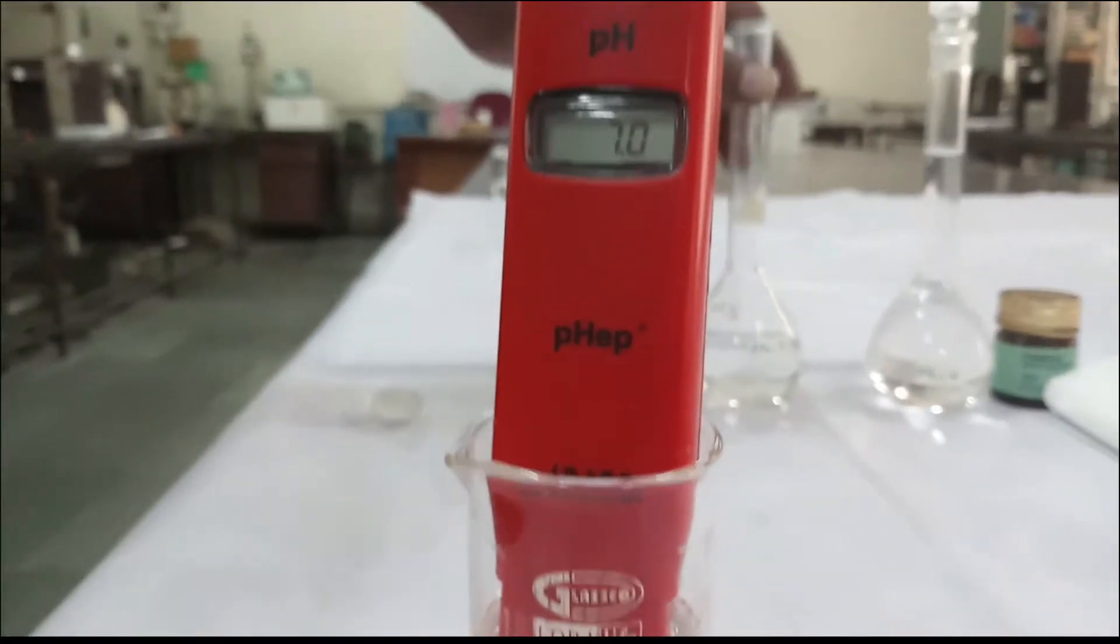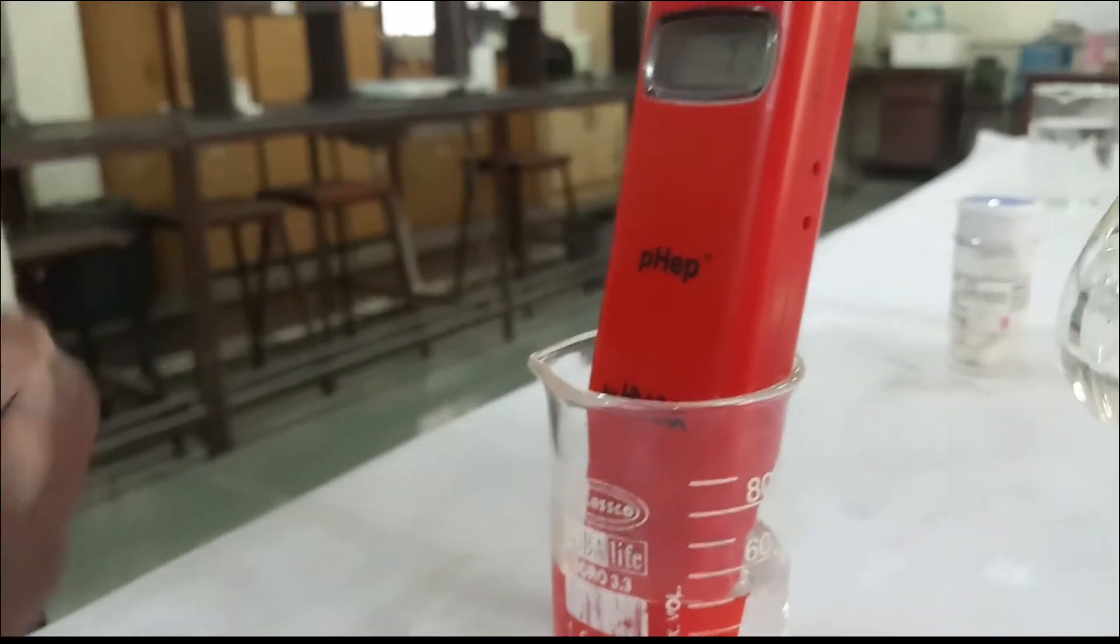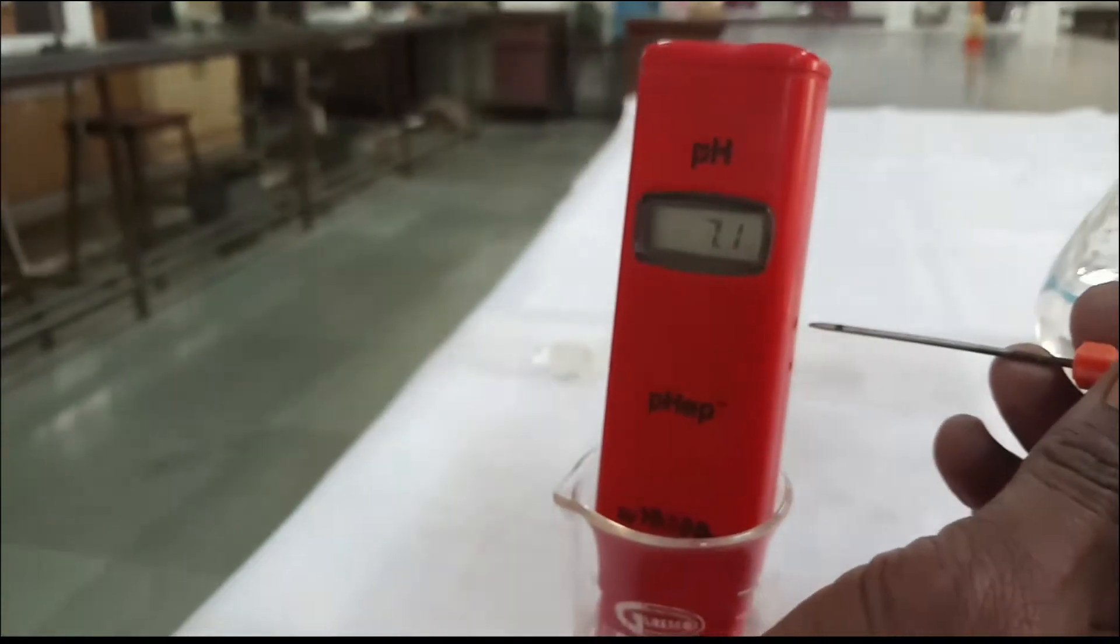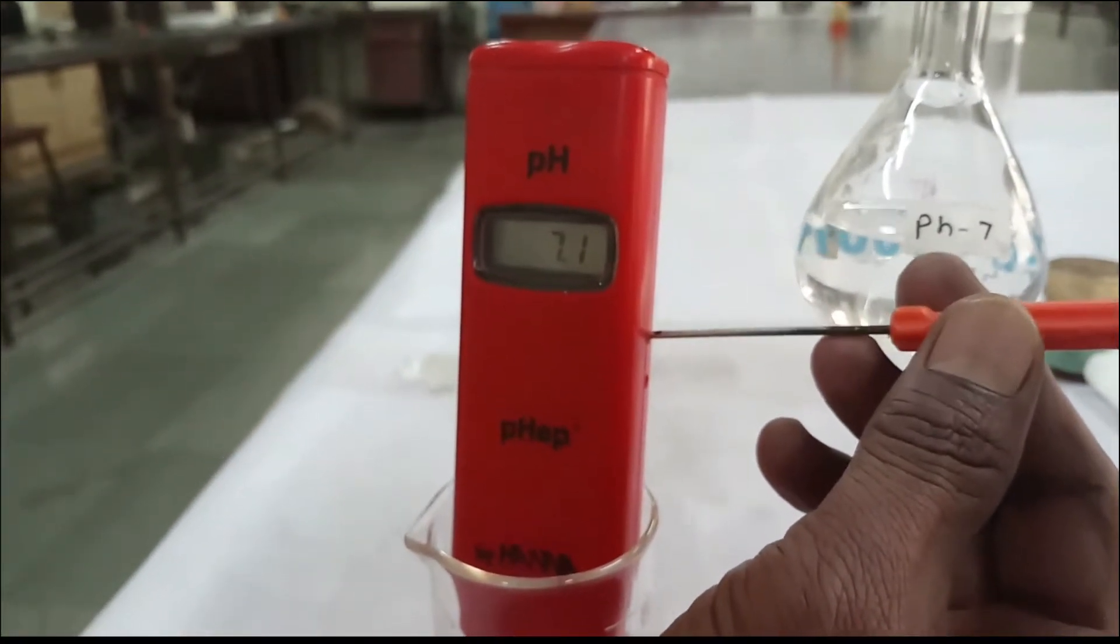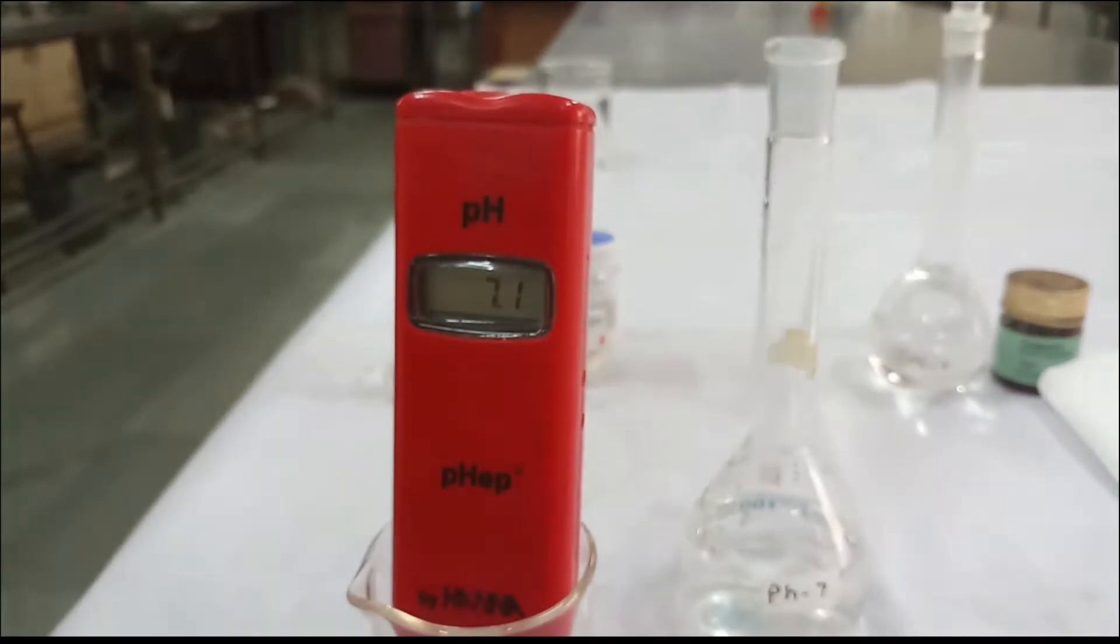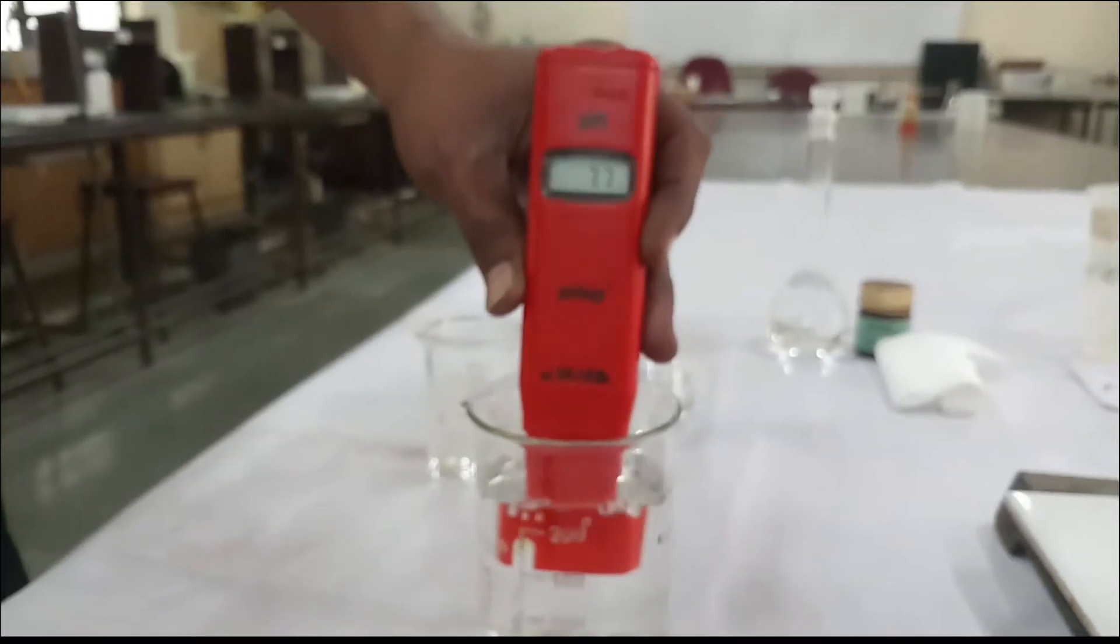Dip the pH meter in pH 7 buffer solution. If it reads 7, no need to adjust. If not, you adjust it with the calibration knob.